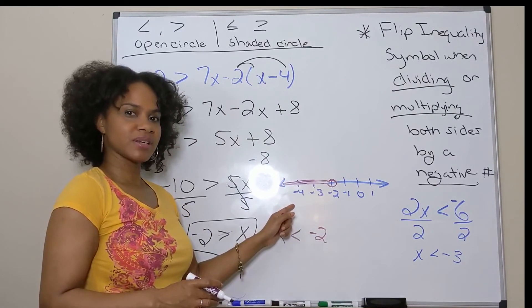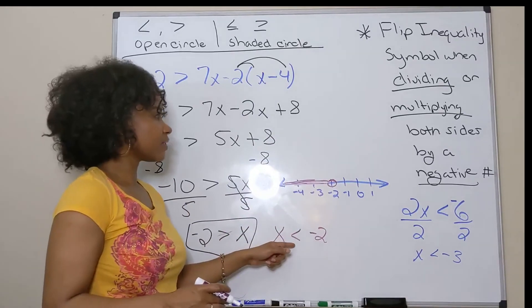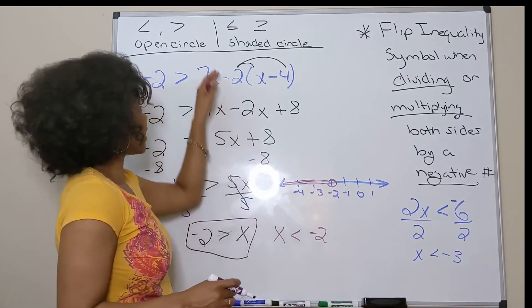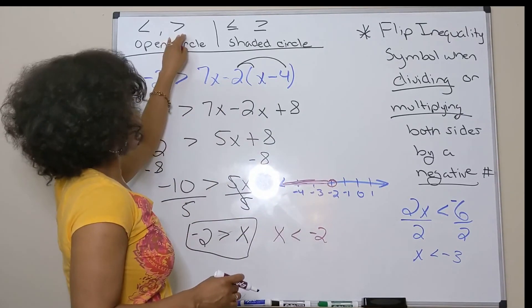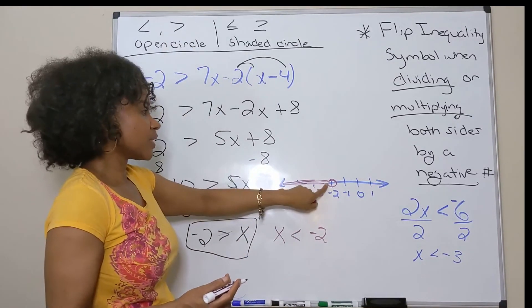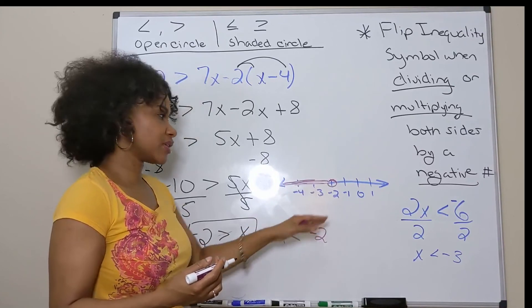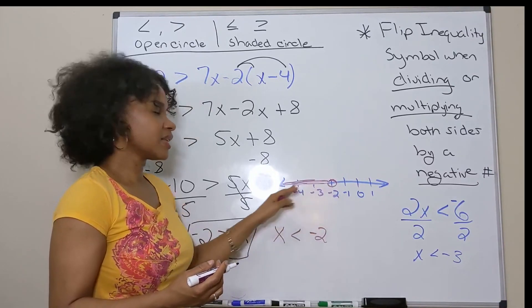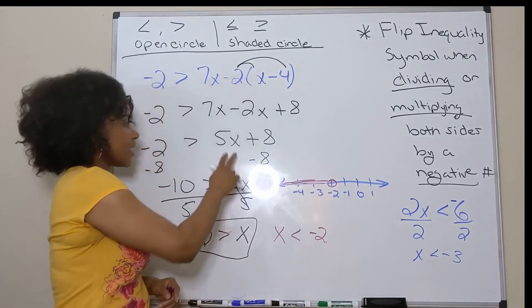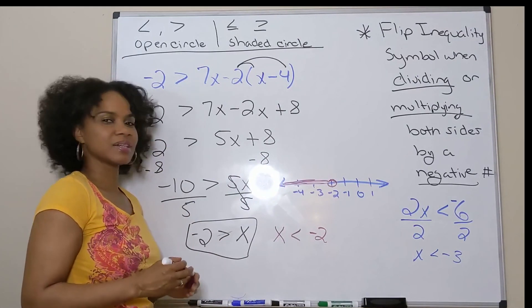So I've graphed this inequality — solved it first, and then graphed it. Just remember, if you don't have an equal to sign underneath, it's going to be an open circle, so negative 2 would not be included in the solutions to this inequality. And that's how you solve and graph a multi-step inequality.